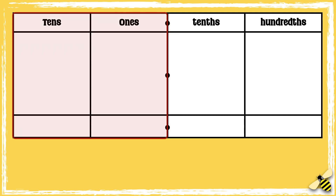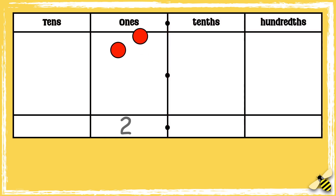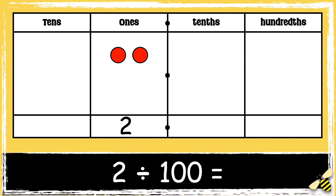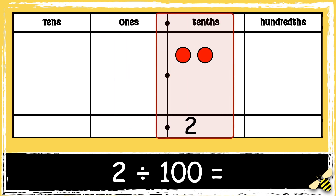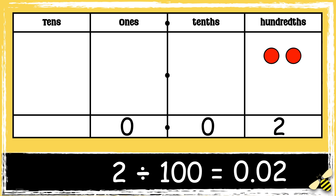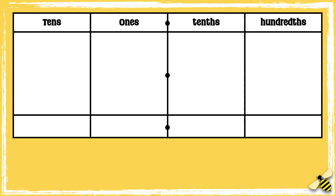Here is the number two. When we divide a number by a hundred, we move the digits two places to the right. So two ones become two hundredths. We need to use zero as a placeholder to show that there are no ones. We also need zero as a placeholder to show that there are no tenths. So the answer is zero point zero two.